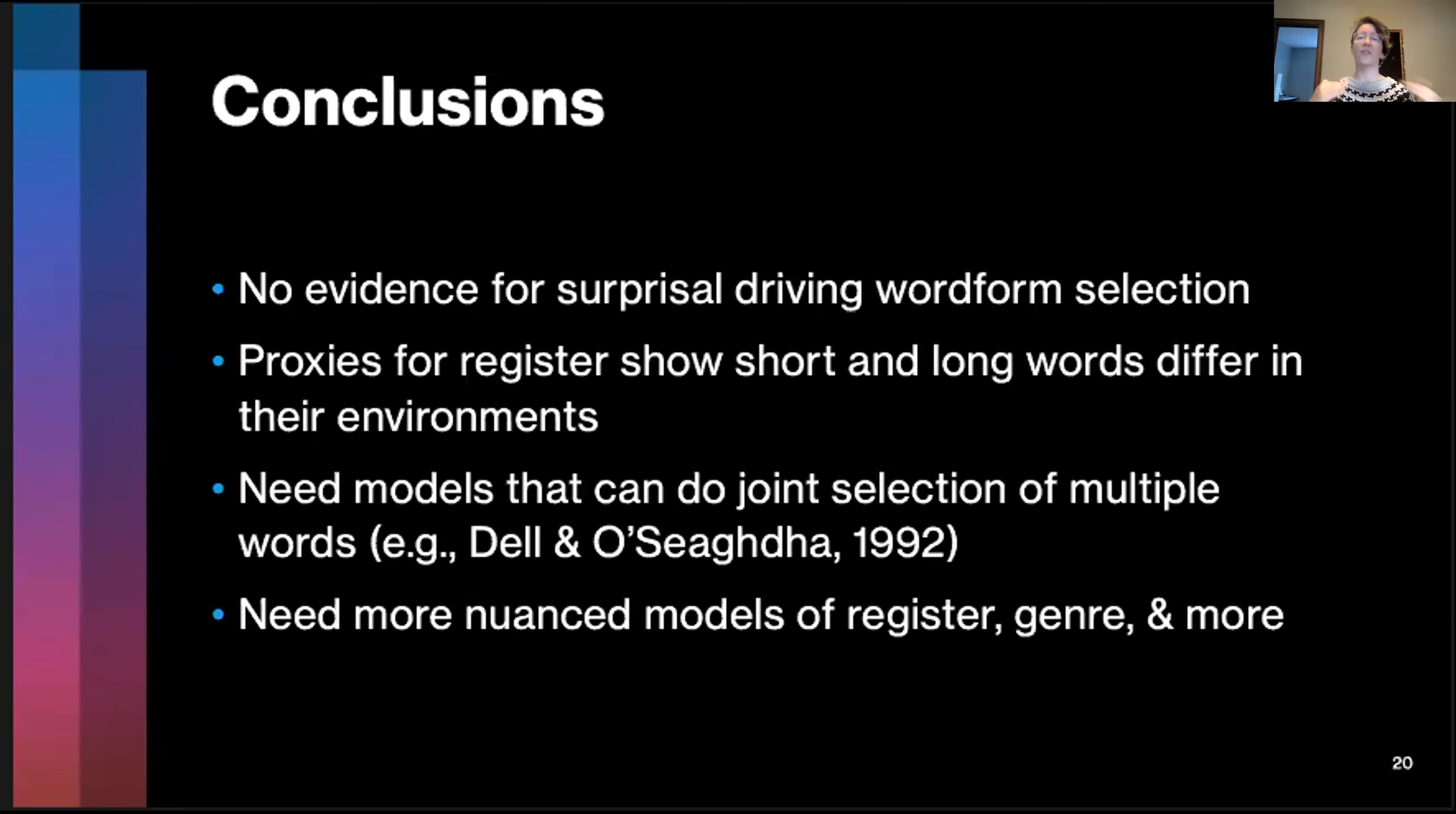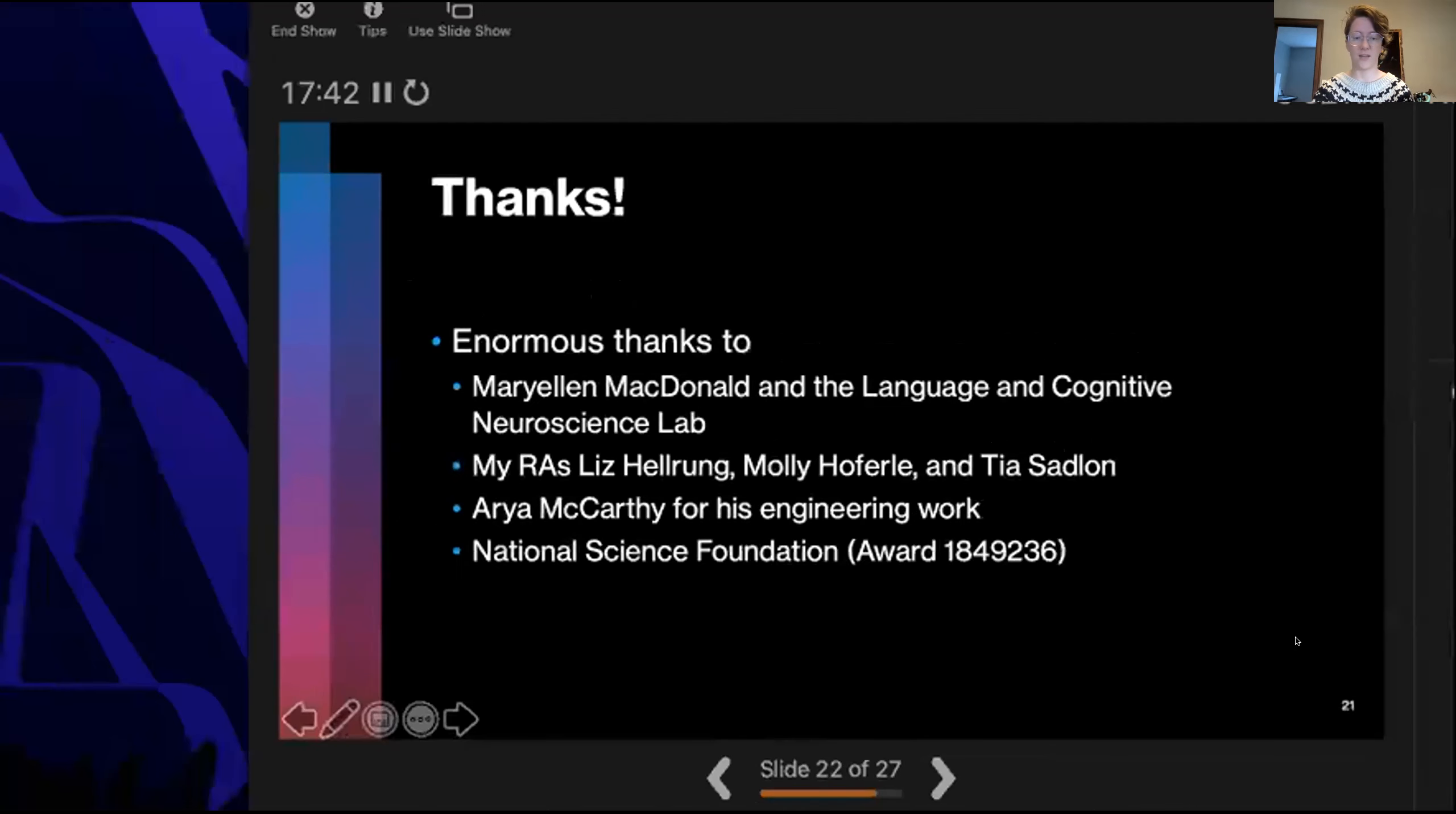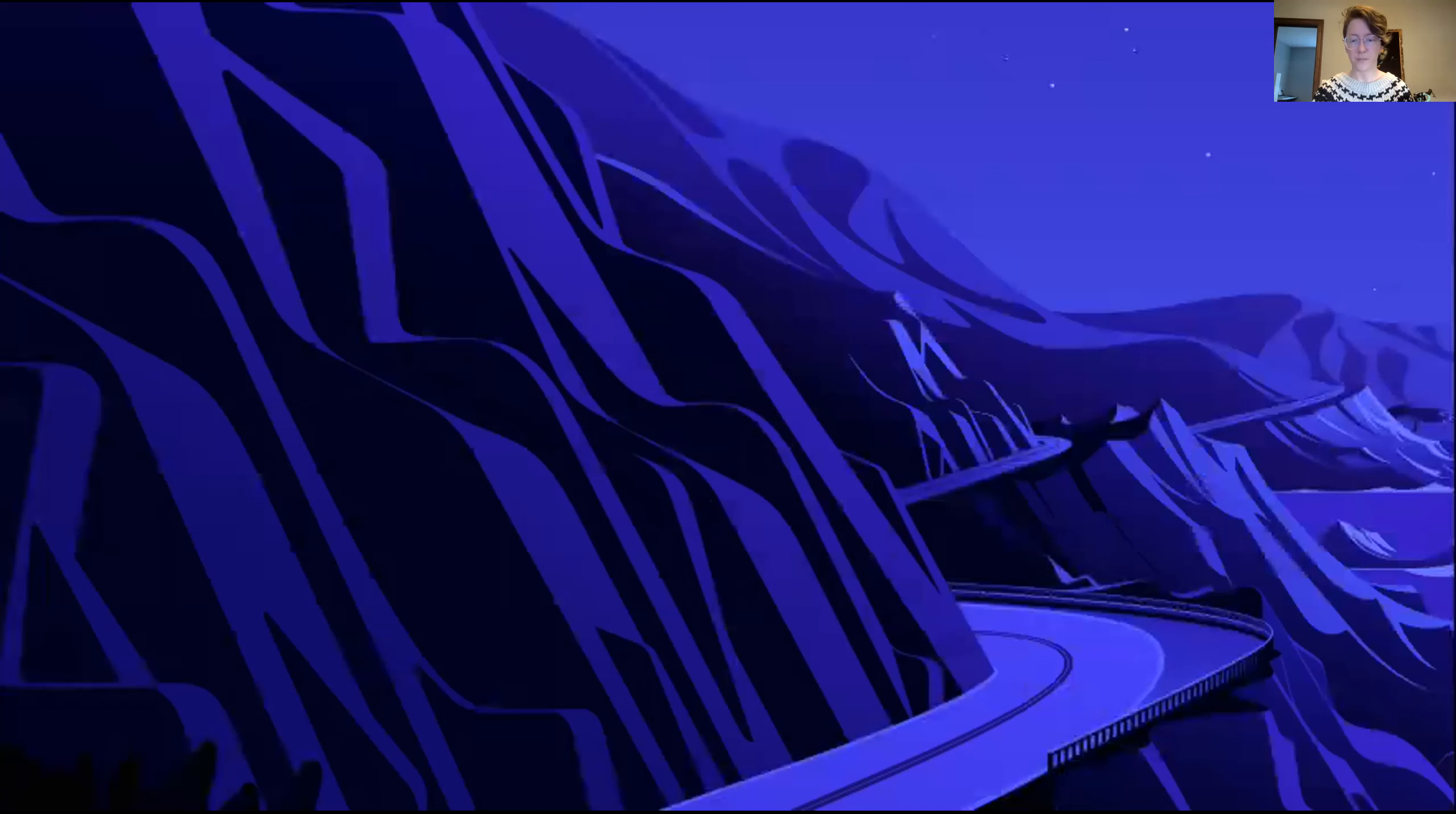What we really need are models that can extend and perhaps integrate information theoretic approaches to lexical selection with realistic sentence and utterance production. More importantly, I think what this underscores is the lack of contact between psycholinguistic research and more sociolinguistic or interpersonal discourse-related factors. There are very few models that are sensitive to things like register or genre. With this, I think that we're really motivating further work in this area. I would like to thank all the people from the lab, especially my RAs who did a lot of work to create these sentences, as well as Arya McCarthy for his engineering work and getting some of these models to produce surprisal for me. With that, I would like to take some questions and would like to know some more about what you are thinking.